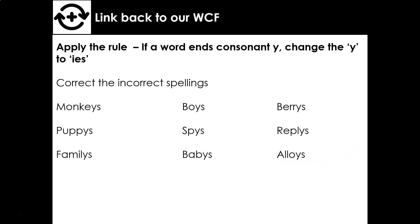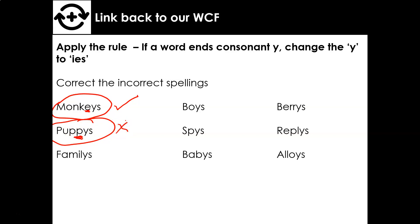Let's put this into practice now — we need to apply the rule. Correct the incorrect spellings here. Starting with the first one: 'monkeys.' Does this end with a consonant and then a Y? No — this letter is a vowel, so it's correct and we don't need to change it. Now 'puppies' — is the letter before Y a vowel or a consonant? It's a consonant, so this one's wrong and needs to change. Write the correct spelling for puppies, then go through the rest of the words and fix the ones that need to change. Pause the video and we'll mark our answers in a few minutes.